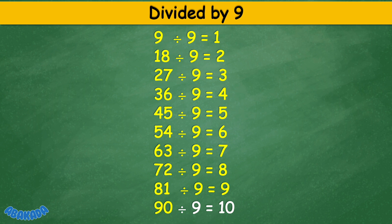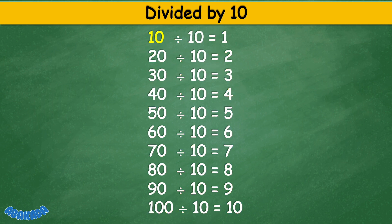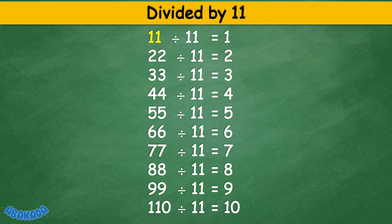90 divided by 9 equals 10. Divided by 10: 10 divided by 10 equals 1, 20 divided by 10 equals 2, 30 divided by 10 equals 3, 40 divided by 10 equals 4, 50 divided by 10 equals 5, 60 divided by 10 equals 6, 70 divided by 10 equals 7, 80 divided by 10 equals 8, 90 divided by 10 equals 9, 100 divided by 10 equals 10.